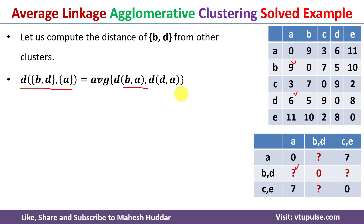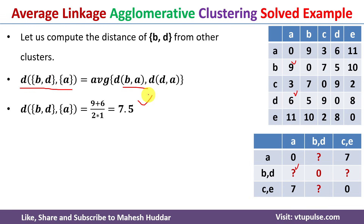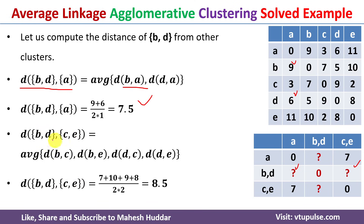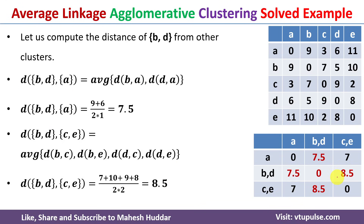The distance from BD to A = (distance B to A + distance D to A) / (2 × 1) = (9 + 6) / 2 = 7.5. The distance from BD to CE is calculated as (distance B to C + distance B to E + distance D to C + distance D to E) / (2 × 2) = 8.5. We update the weight matrix with these values.